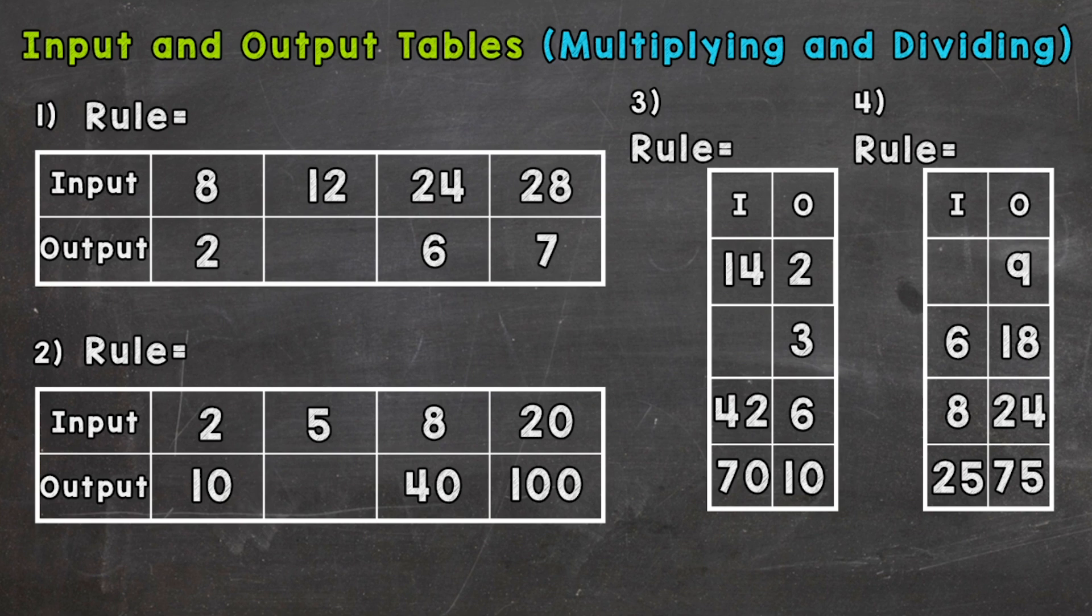So what do we divide eight by to equal two? Hopefully you're thinking four. Let's see if it works for the others. 24 divided by four is six. 28 divided by four is seven. And then for our blank, 12 divided by four is three. So our rule is the input divided by four equals our output.